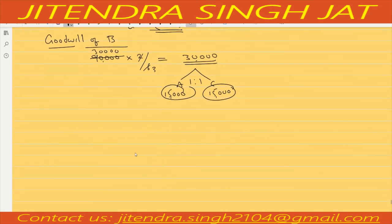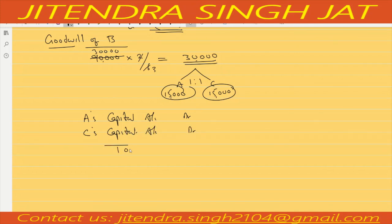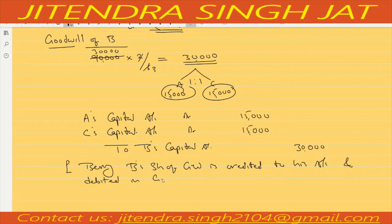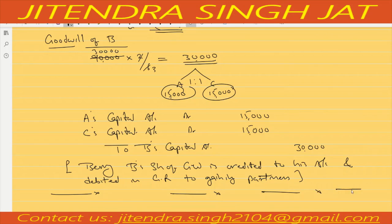Let's pass the journal entry. A's capital account will be debited and C's capital account will be debited, credited to B's capital account. B will get 30,000 — A gives 15,000 and C gives 15,000, that's why their capital accounts are debited. B's share of goodwill is credited to his account and debited in gaining ratio to gaining partners. I hope this question is clear to everyone.